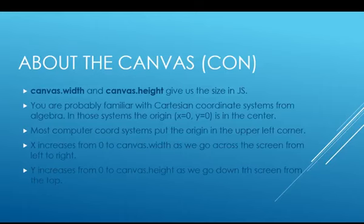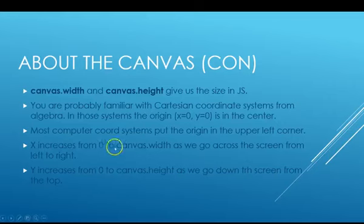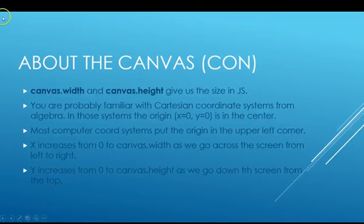I'm assuming you've seen Cartesian coordinate systems already in your algebra classes. In those systems, we have the origin in the center of the screen, with the X and Y axis having a value of zero at the origin. This is not how we do it in computer systems. Almost every computer system uses a coordinate system where the origin is up in the upper left corner. As we go across the screen from left to right, X increases, and as we go down from top to bottom, Y increases.